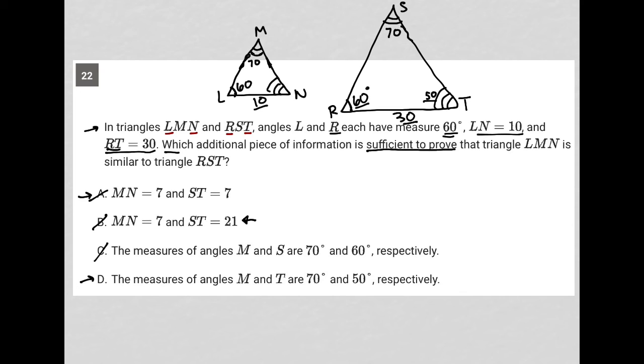So that would give me a match for M and S. So that's good. And 70 and 60 is 130, which would make N have to equal 50 to add up to 180. So that gives me a match between N and T.